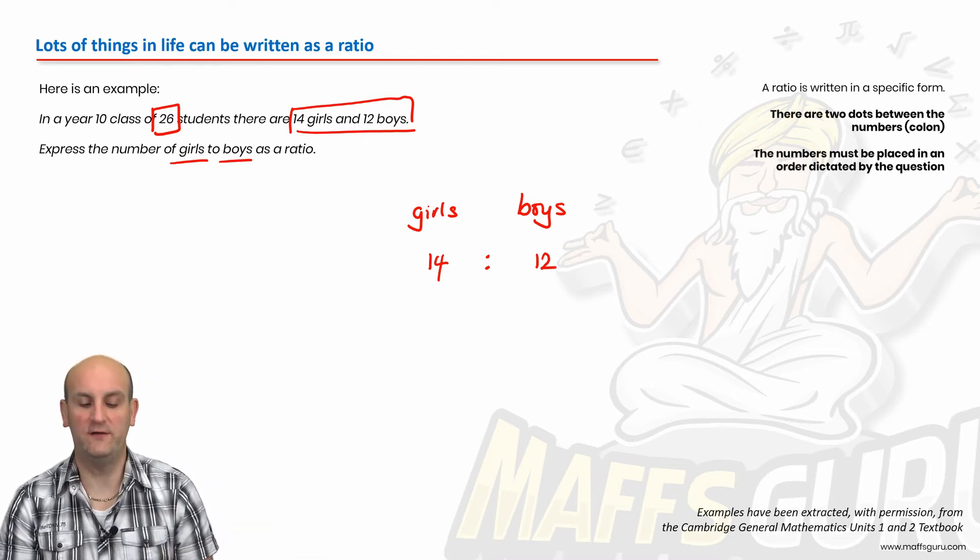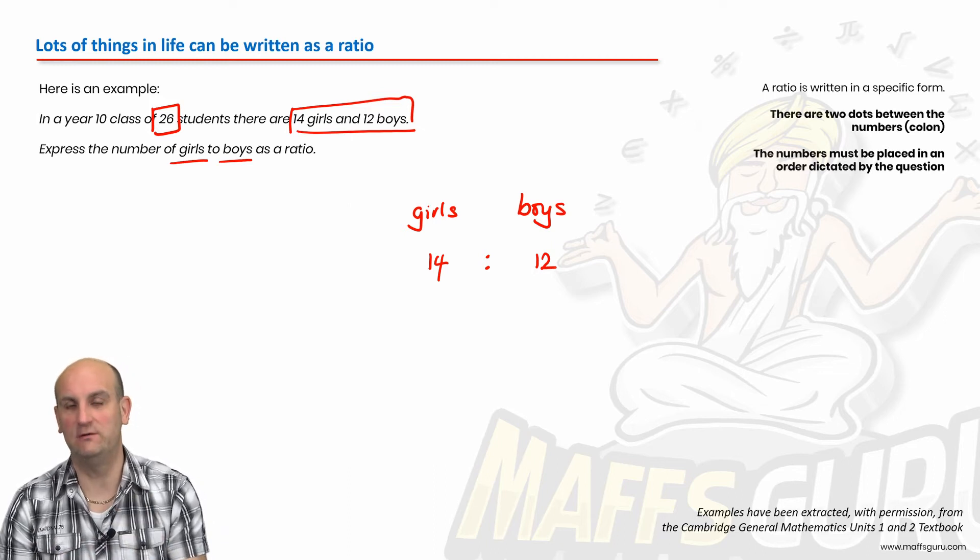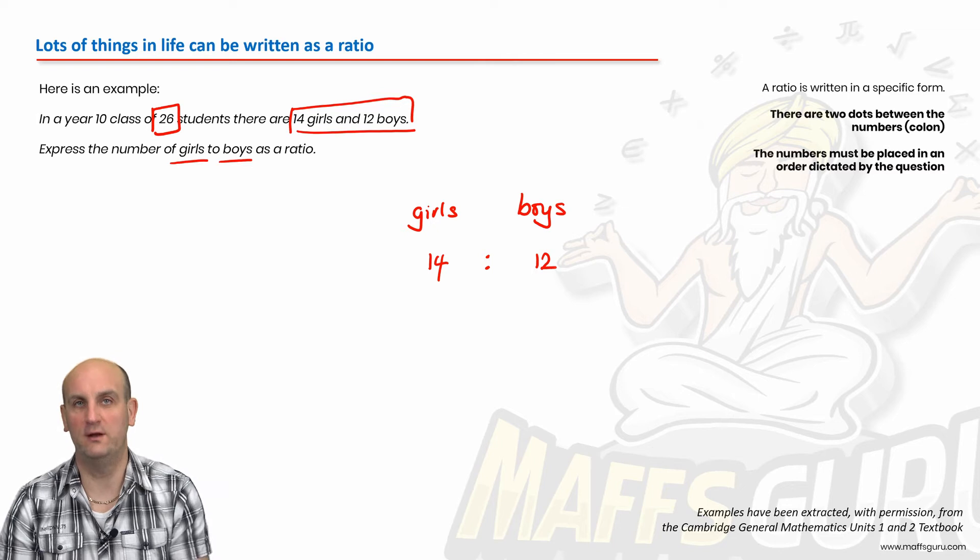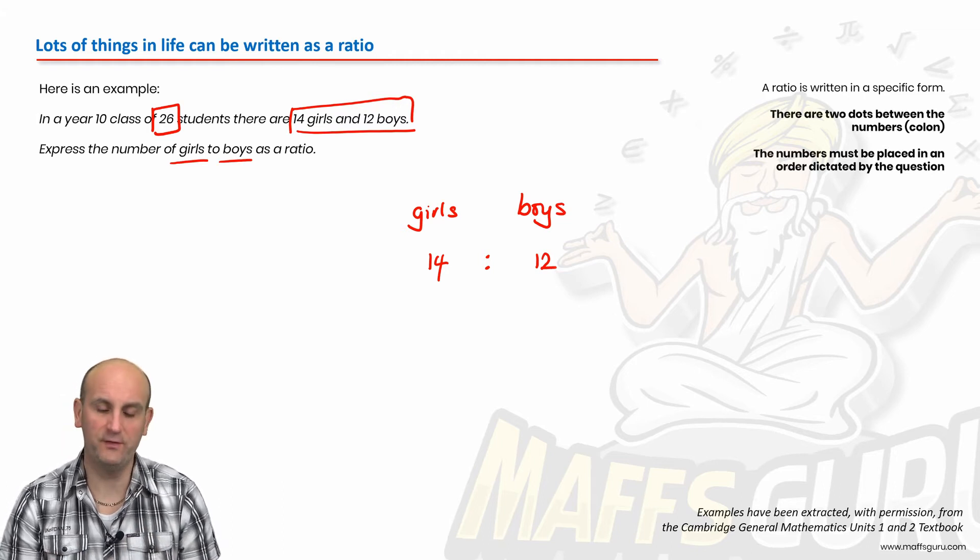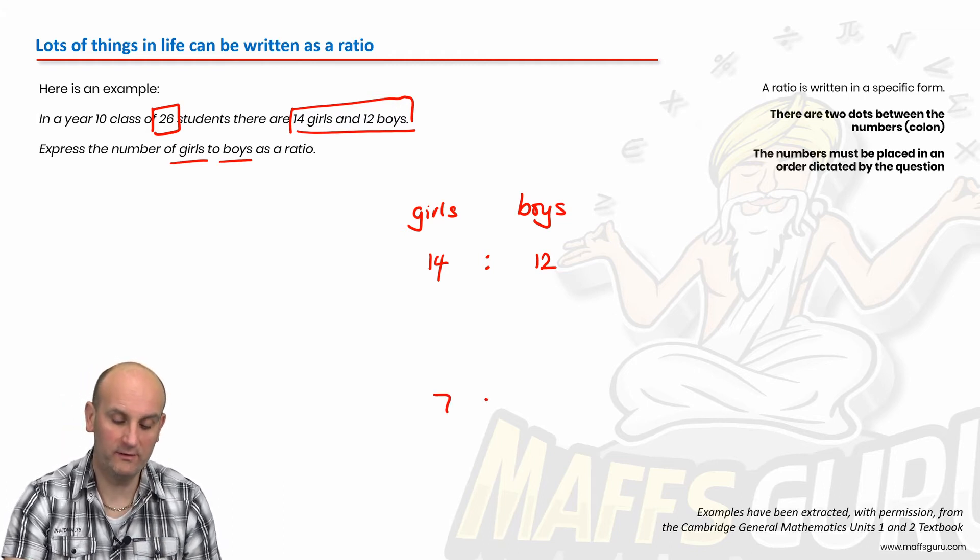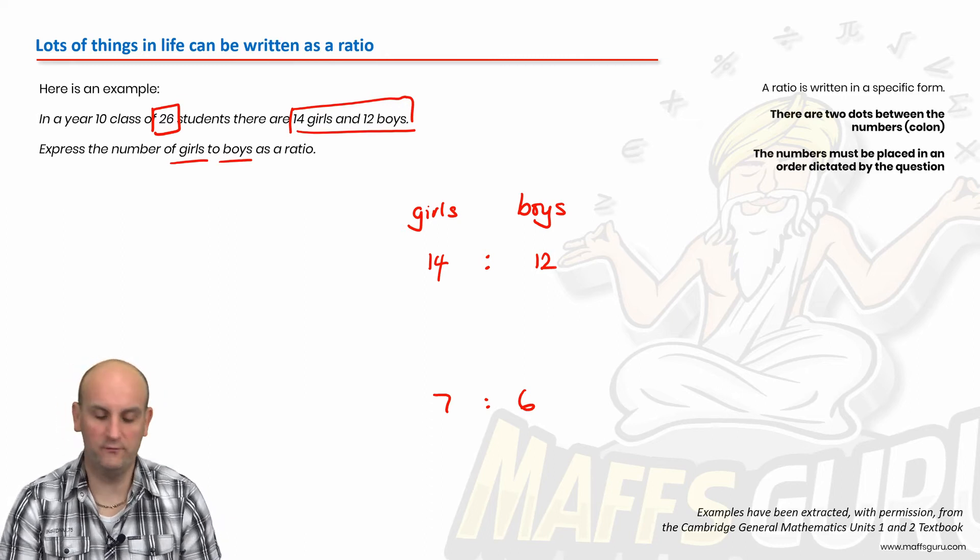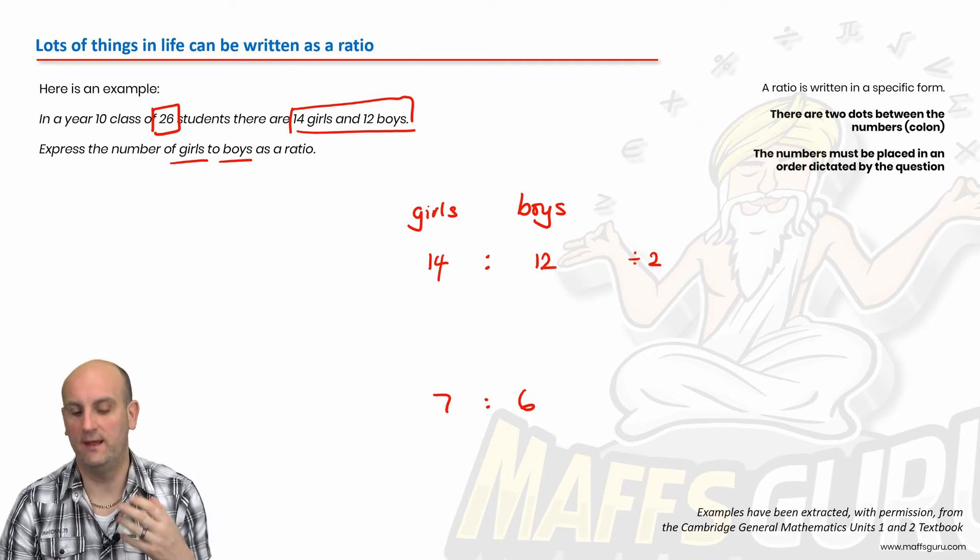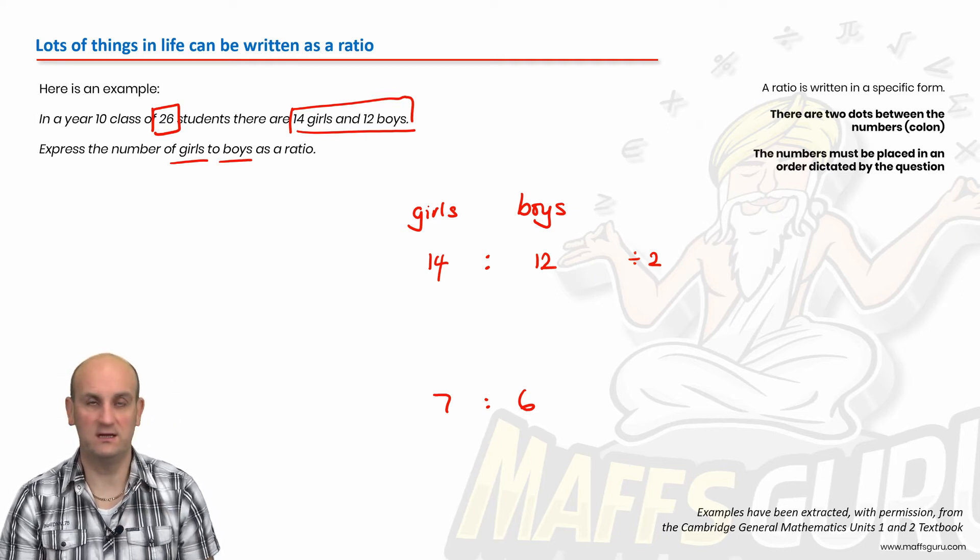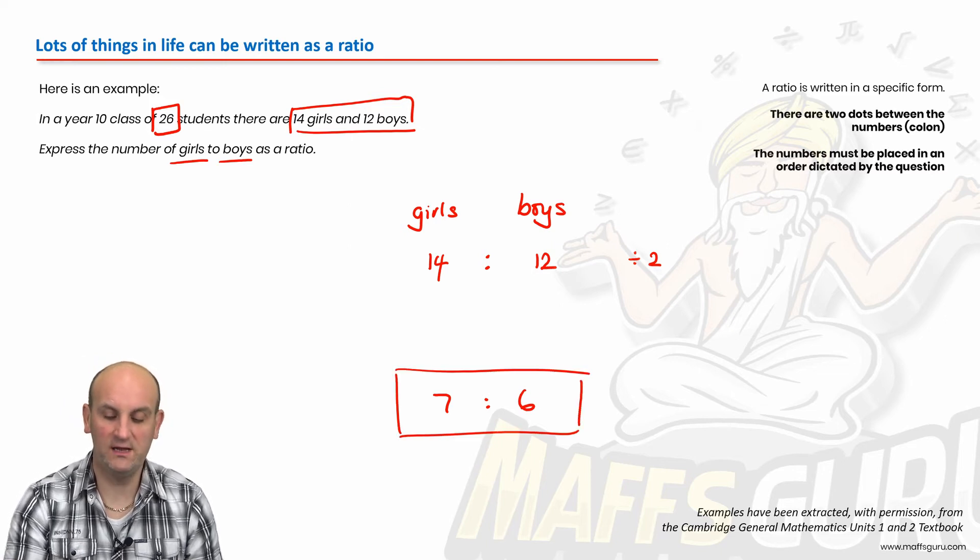Now obviously later on, we have to be able to simplify ratios. That's not necessarily my final answer. Later on, it might ask me to cancel this down or show it in a simpler way. And we can do that using the work we have from fractions. And for those of you who want to know, that would be written as 7:6. Can you work out why? Hopefully you realize that both of those numbers can be divided by two. And then once I get to 7 and 6, I can't take it any lower.